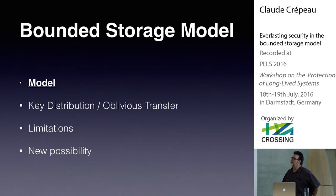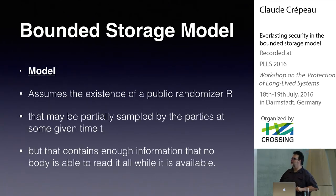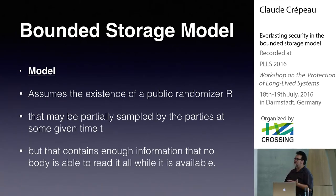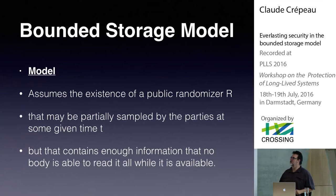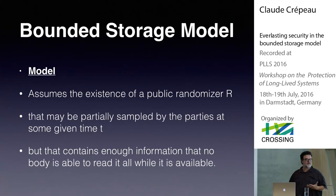Let me tell you a little bit more about the model. We would like to claim that it's possible to have sources of information that contain so much information at a given time that nobody can store this entire information. That's basically the crux: there exists what we call a public randomizer — a source of randomness which is publicly available so that any honest party can access and sample a little bit of it, whereas even very powerful adversaries are not able at a given point in time to store it all.